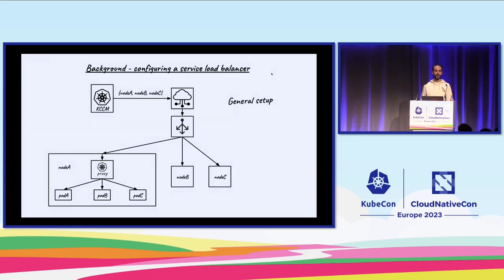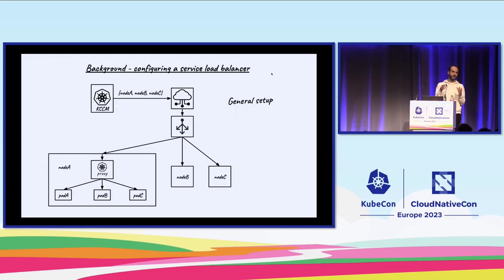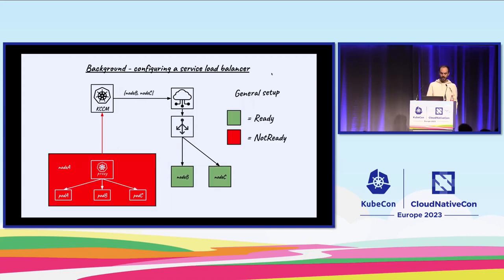Simultaneously on the data plane, you'll have the service proxy, which creates networking rules. Depending on the service proxy, these can be a wide variety of different rules to forward traffic to the endpoints — the pods. Essentially the load balancer sends traffic to the node, and the networking rules on the node forward traffic to the pods, thus achieving ingress connectivity.